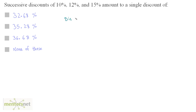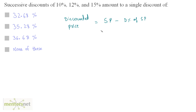The discounted price is equal to the selling price reduced by the percentage of that discount — selling price minus D% of the selling price, which is basically (100 minus D)% of the selling price. With this, let us solve this question.